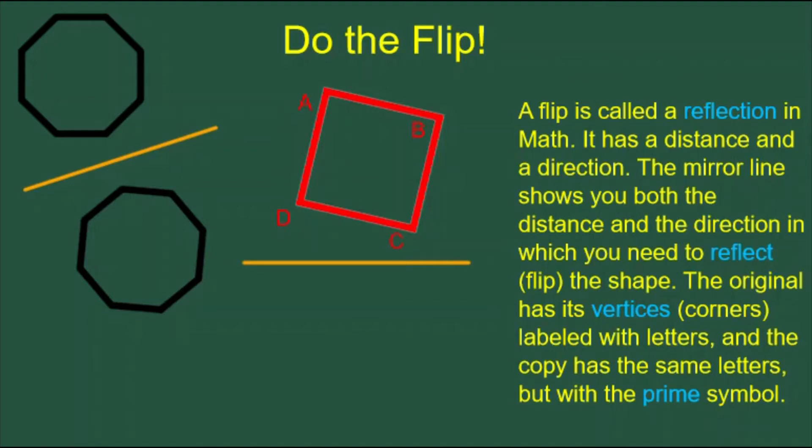Today's Daily Dose of Math is about the flip. The flip is called a reflection in math. In the example on the left, we have a black hexagon, and then the mirror line is shown in orange. A reflection of the hexagon across the mirror line would look like this other hexagon.